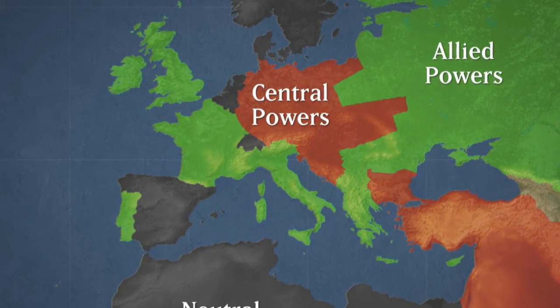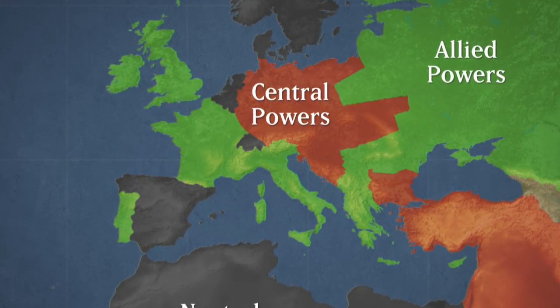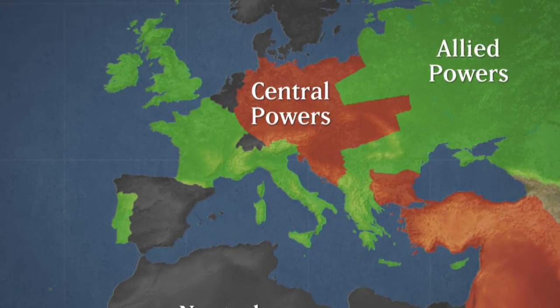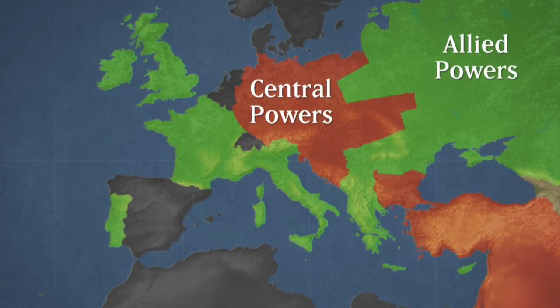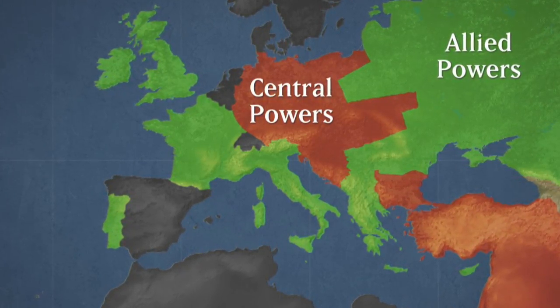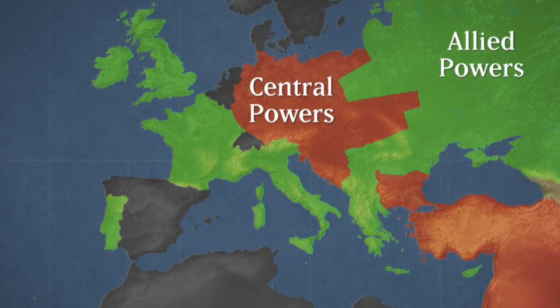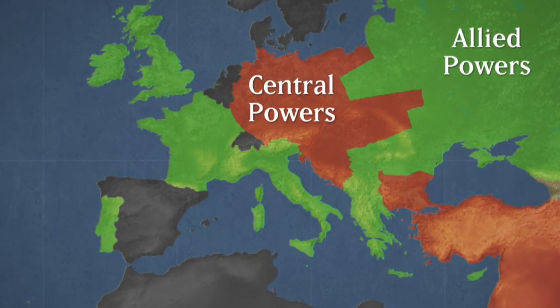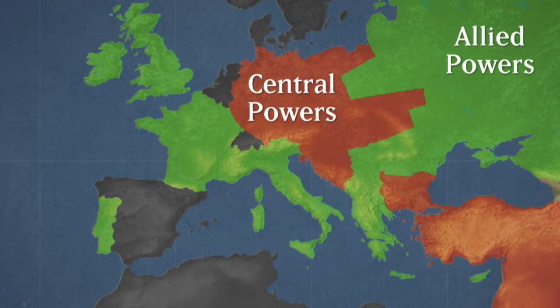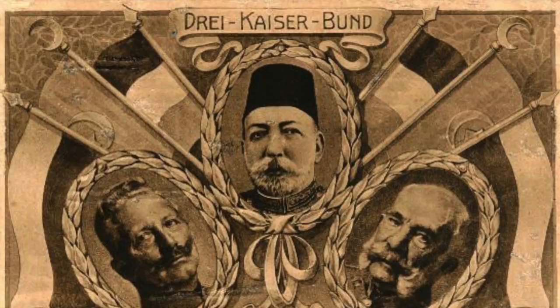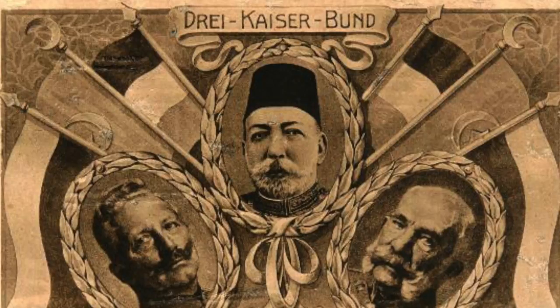Nevertheless, the relationships between the Germans, British, and French were already tense, as they were rivals in trading and colonizing. Initially, these alliances were meant to keep every empire in check, thus preventing an outbreak of war.